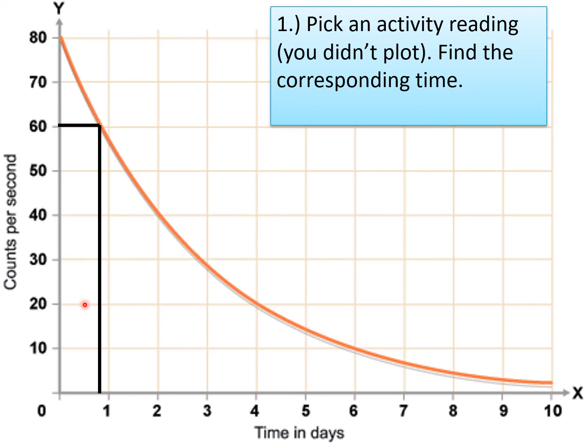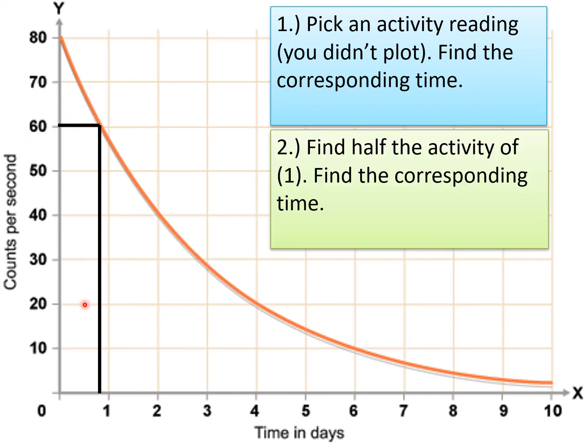The second thing is find half the activity and find the corresponding time. If we started at 60, then half the activity means it's going to be at 30, and then we find the corresponding time—that's about maybe 2.9.